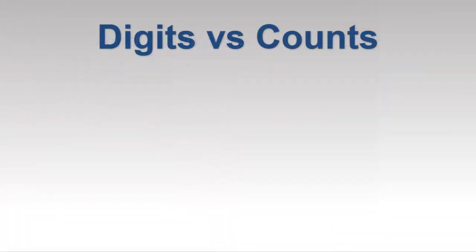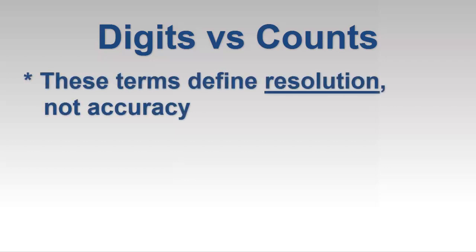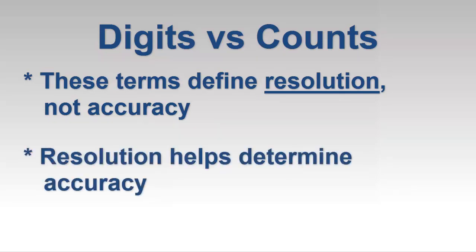Two terms critical to understanding accuracy are digits and counts. It's important to note that neither term defines accuracy. Instead, they define an instrument's resolution, a point we'll discuss shortly. Resolution is a key factor in calculating accuracy and uncertainty, so we need to clearly understand these concepts.